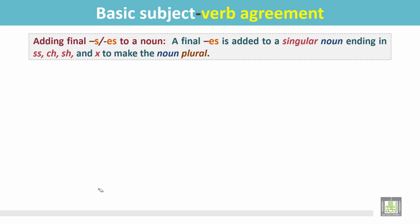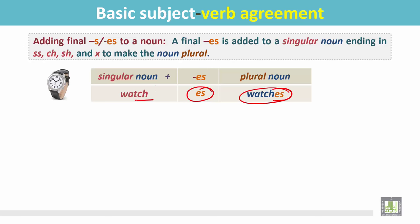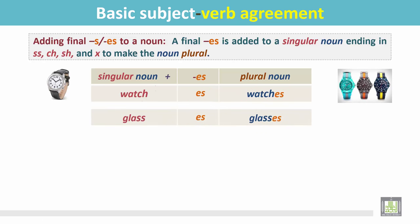A final ES is added to a singular noun ending in double S, CH, SH, or X to make the noun plural. In this chart we see the singular noun 'watch' — this noun ends in CH, and according to the rule we add ES to make it plural: 'watches.' Another example: 'glass' ends in double S, and we add ES to make it plural: 'glasses.'